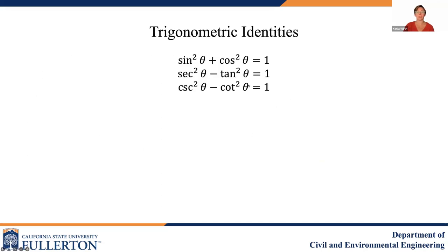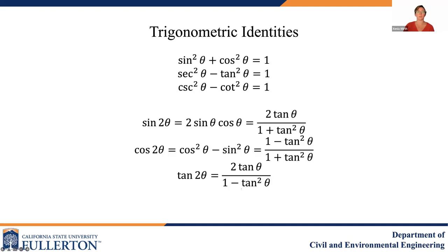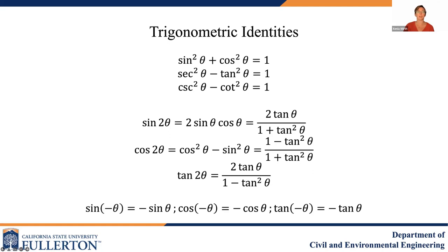We also have some very useful trigonometric identities. Sine squared theta plus cosine squared theta equals 1, based on the unit circle. Secant squared theta minus tangent squared theta also equals 1. And cosecant squared theta minus cotangent squared theta equals 1. We also have the double angle identities: sine of 2θ equals 2 sine θ cosine θ; cosine of 2θ equals cosine squared θ minus sine squared θ; and tangent of 2θ equals 2 tangent θ over 1 minus tangent squared θ. These can be very useful for simplifying problems in integration or differentiation. For negative angles, the negative sign can be moved out front for sine, cosine, and tangent.